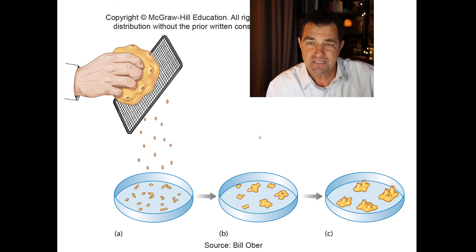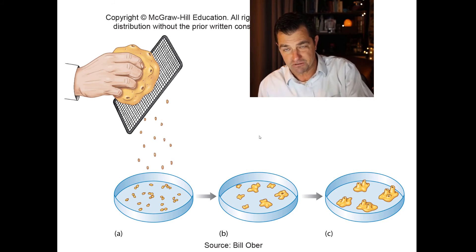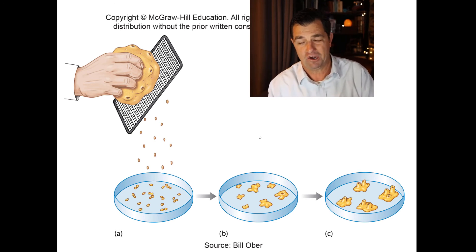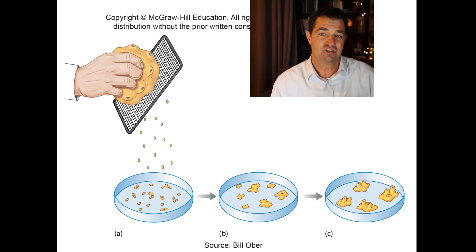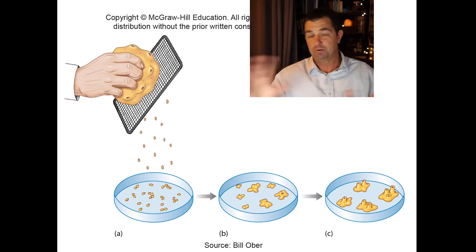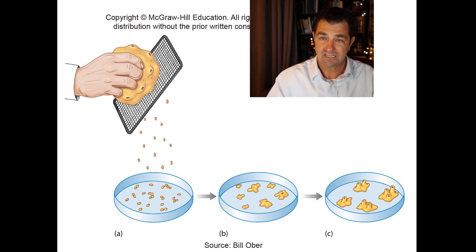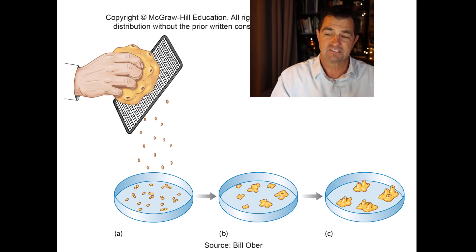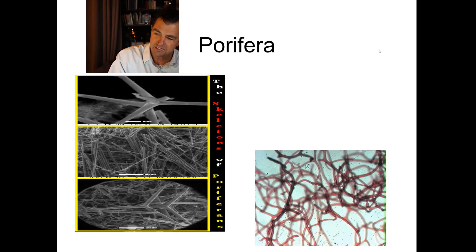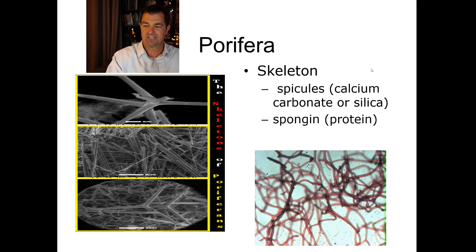Because sponges are at the cellular level of organization, if you run a living sponge across a grater — shredding it into pieces — and place those pieces in saltwater in a petri dish, the cells will often re-aggregate back into a sponge. Remarkably, if you mix two different species together, the cells will often separate back into their respective species because they can recognize one another.